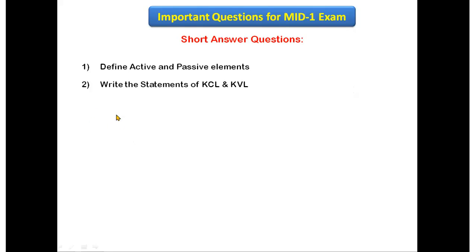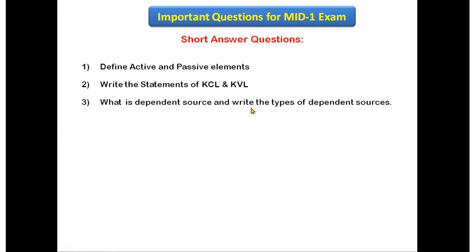The next short answer question is: write the statement of KCL and KVL. For this also you have to write the statements with neat diagrams for both Kirchhoff's Current Law and Kirchhoff's Voltage Law. The next question is: what is a dependent source and what are the types of dependent sources?